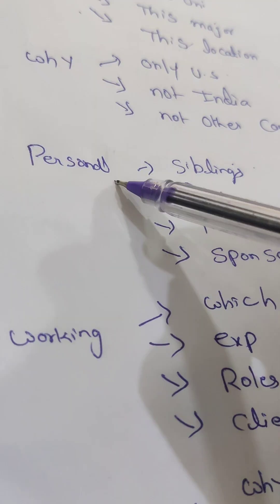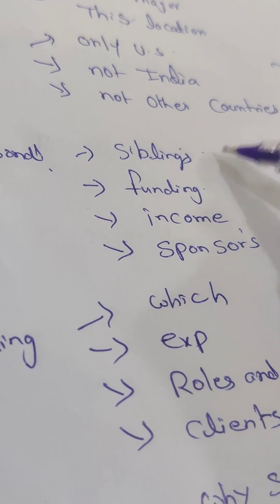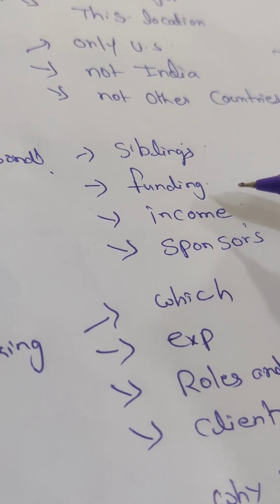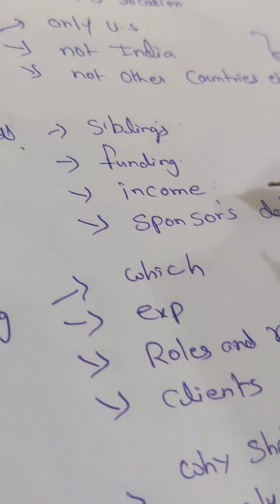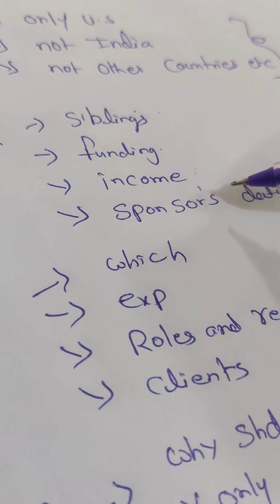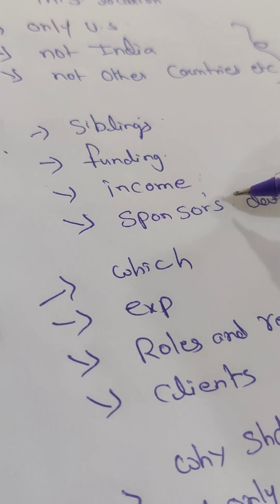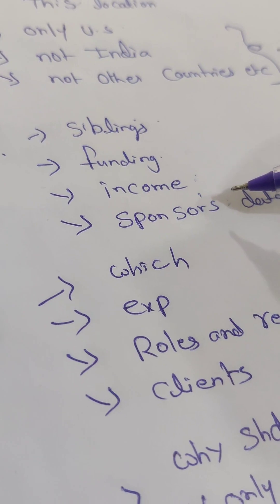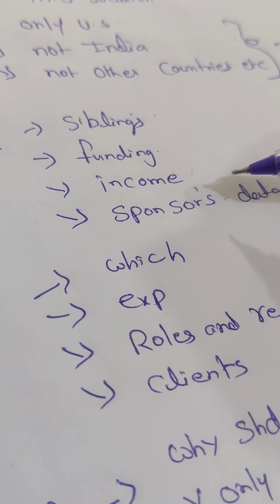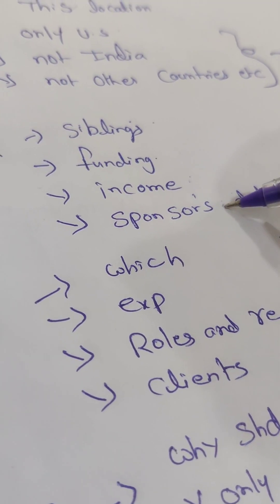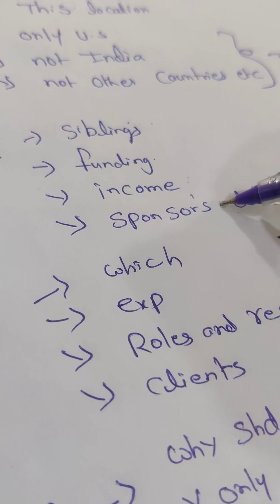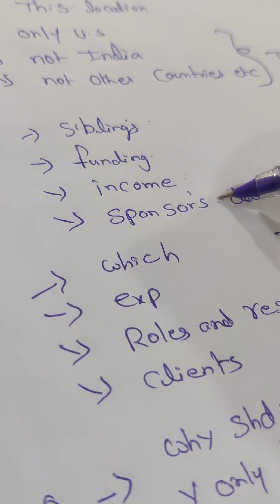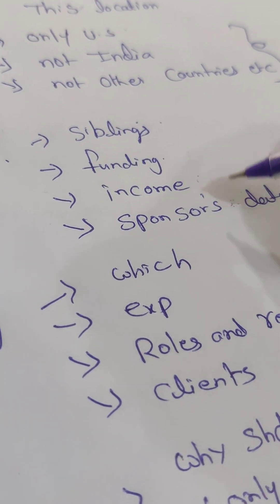The funding questions include: how many siblings you have, who is your sponsor or who is funding you, and what is the income source of your sponsor. If you are working, they may ask about your income. If your sponsor is your dad, they may ask what he does. For example, if your father is a real estate agent, they may ask how many people work under him, what is his yearly income, and how many dependents he has.